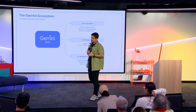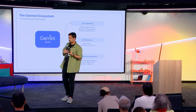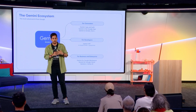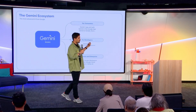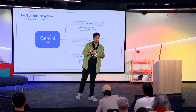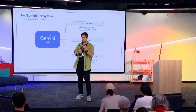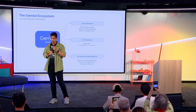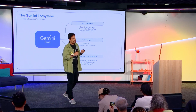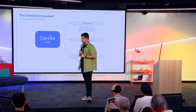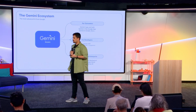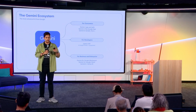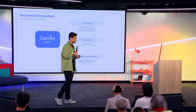The Gemini ecosystem is available for three different consumer points. For regular consumers using Google Drive and not part of any enterprise workspace, you've got Gemini as a plugin or side dashboard. If you're a developer, you've got the Gemini API through AI Studio and Vertex AI, which will be used in the workshop today. And then for businesses and enterprises, you've got managed Gemini, where Gemini directly integrates with your data and enterprise to help you run your business better.